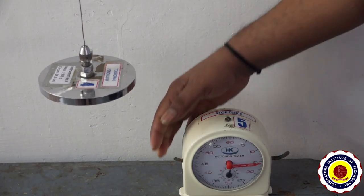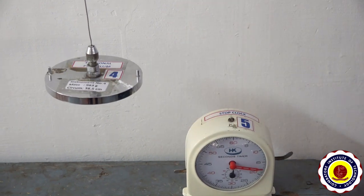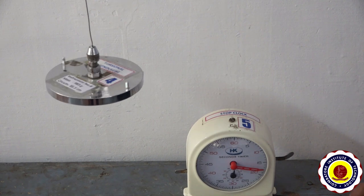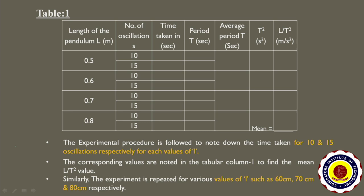After measuring the time taken for 10 oscillations, stop the stopwatch and note the corresponding reading. After taking the time for 10 oscillations for length equal to 0.5 meters (50 centimeters), we record the values. The similar procedure is followed to take the time for 15 oscillations and record it. Then you find the time period, which is time taken for 1 oscillation. Divide the total time for 10 oscillations by 10 to get the time period.